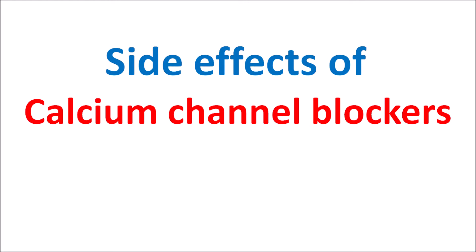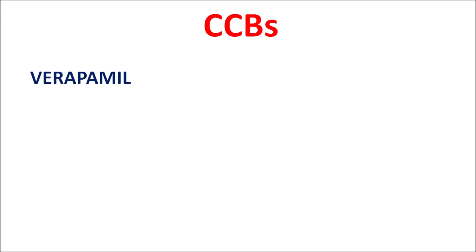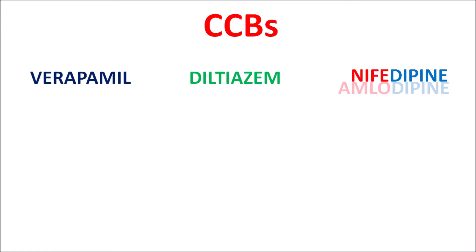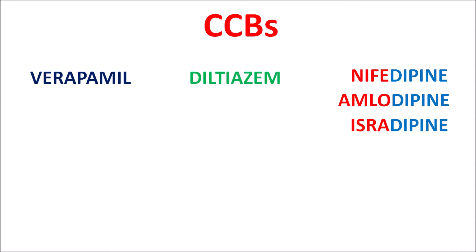Today we will discuss the side effects of calcium channel blockers (CCBs) in an easy way. CCBs have three categories: the first is verapamil, the second is diltiazem, and the third group belongs to the dihydropyridine category, including drugs like nifedipine, amlodipine, isradipine, nicardipine, and felodipine. There are many types of dihydropyridines.